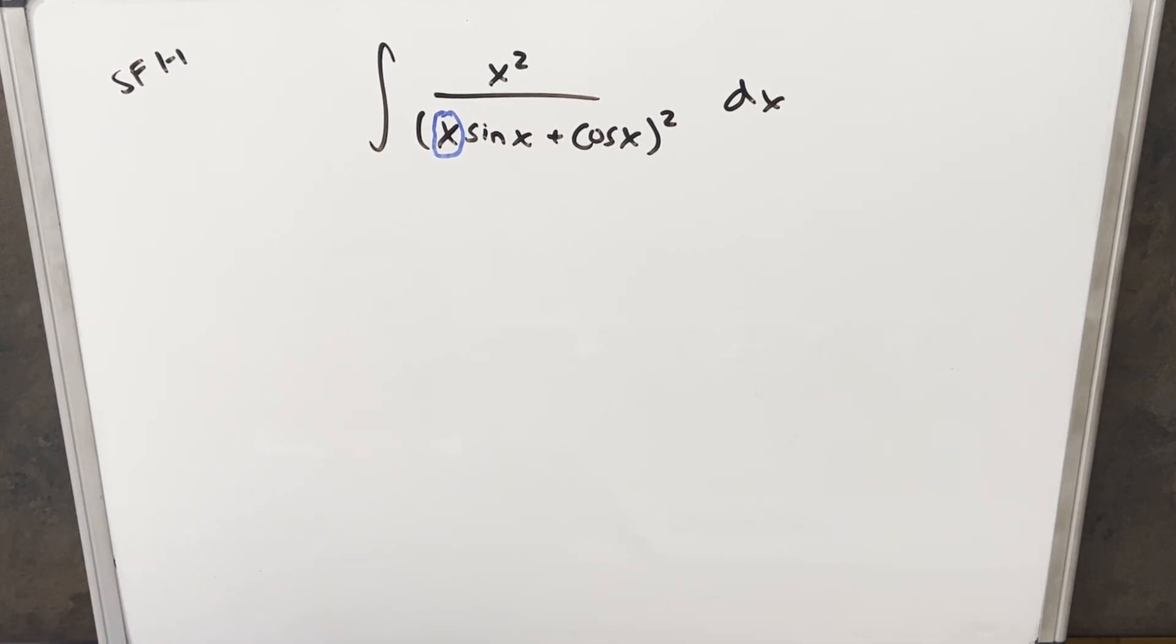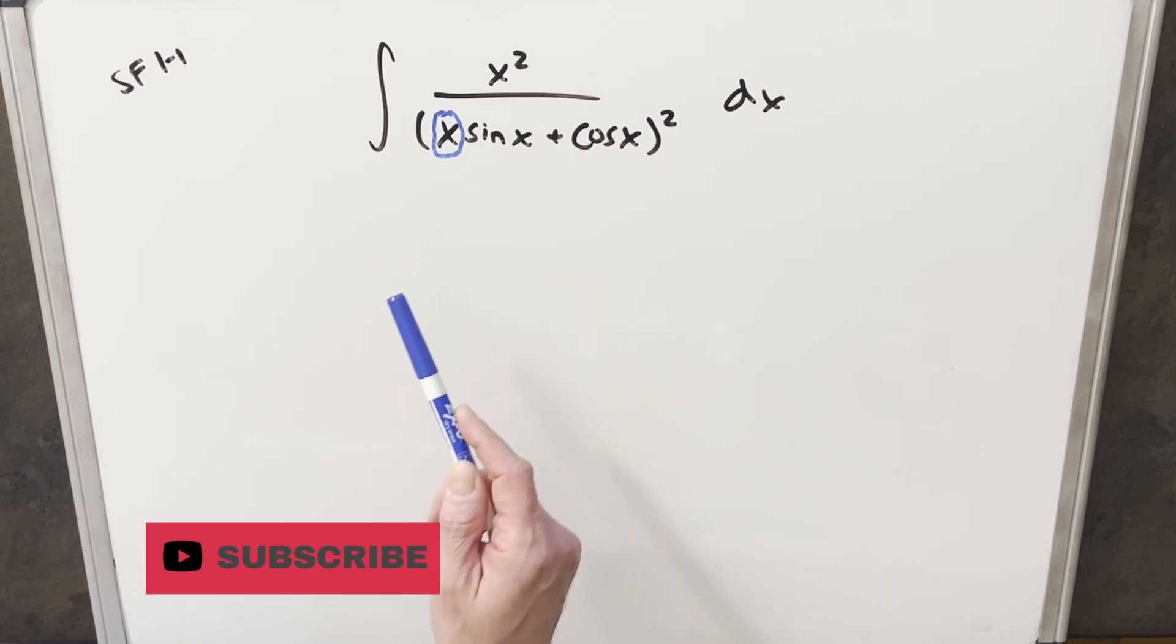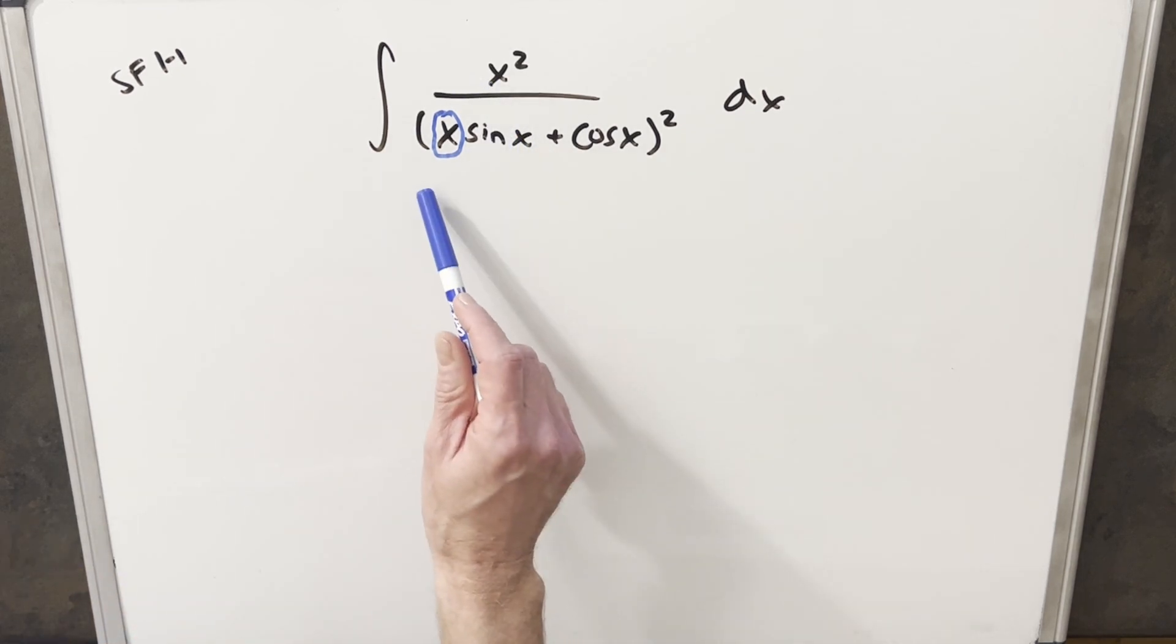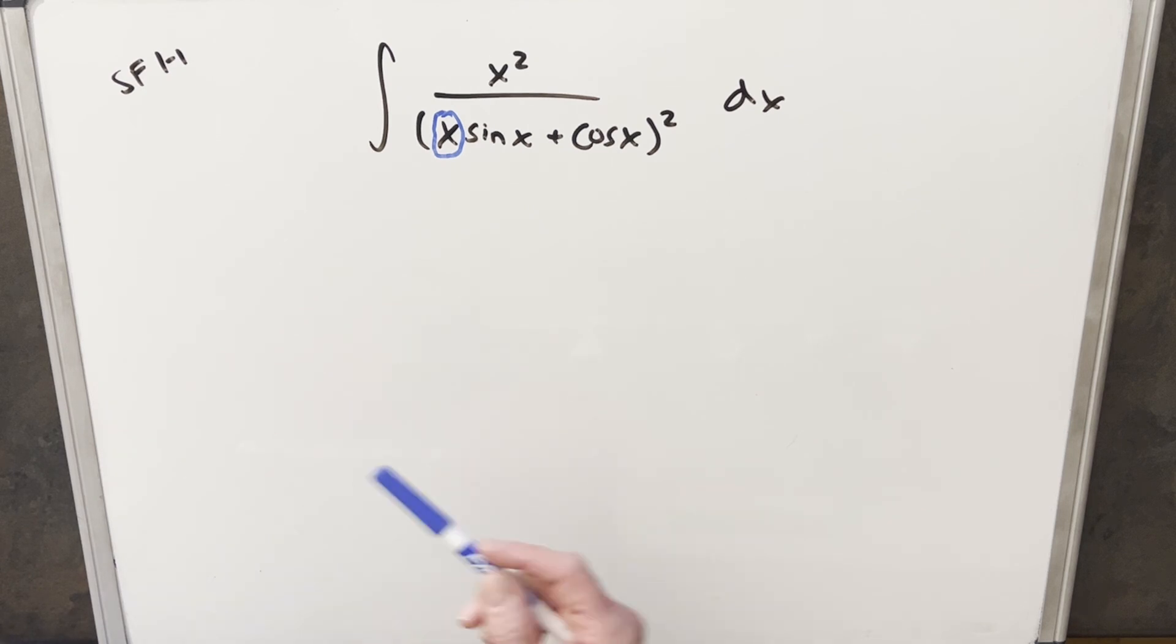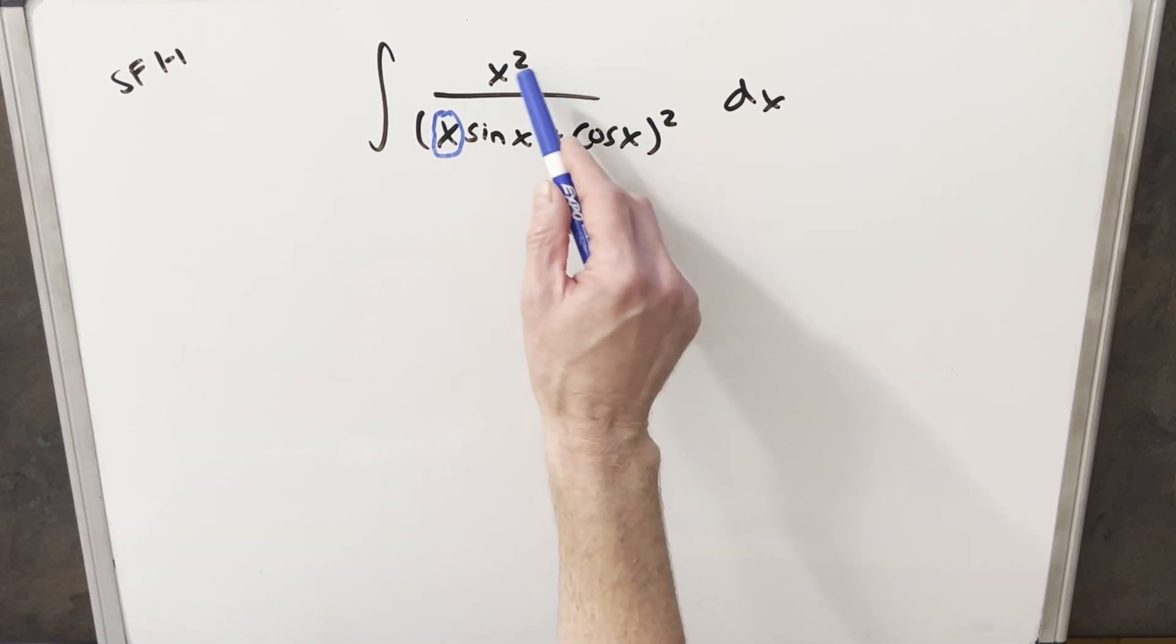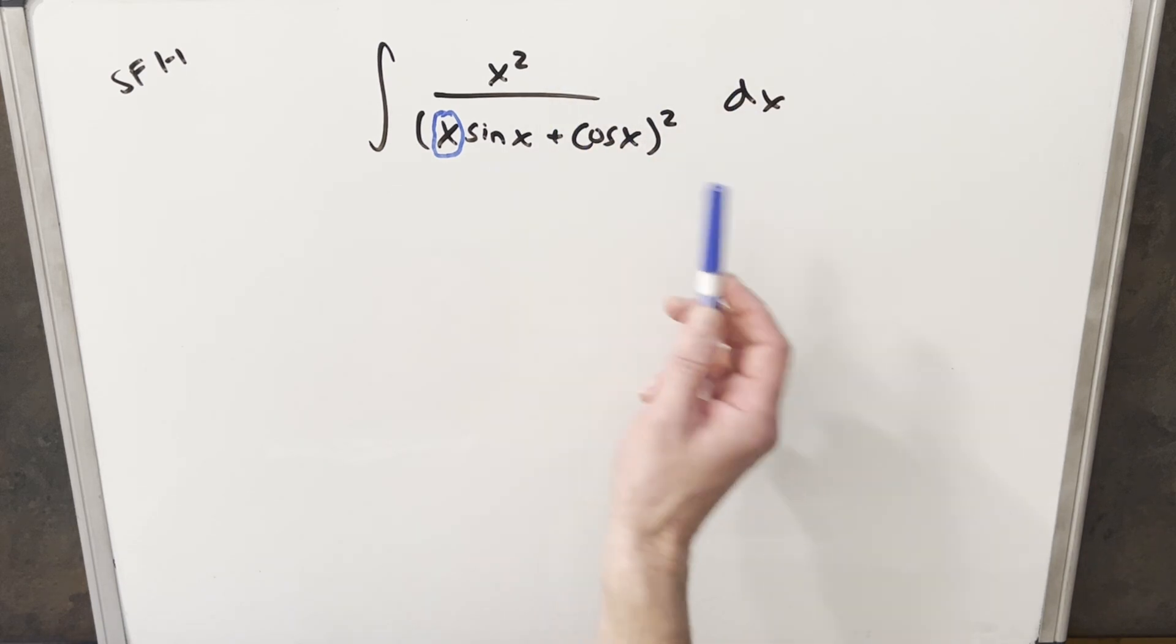What I tried to do was I messed with factoring. So yes, I could factor an x out of this and create a 1 over x here. That didn't really work. I also tried to bring the x squared into the denominator. That didn't really help me very much. I didn't really see a good u substitution because we don't have any trig functions in the numerator. So I don't know how a u substitution is going to work.